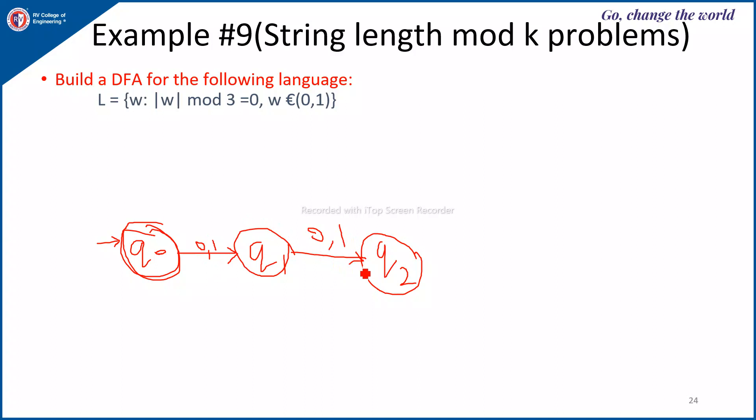Next, if the third symbol is either 0 or 1, the length becomes 3 and the machine should reach the state Q0 because modulo 3, the length if you do is 0. So this is the required machine.